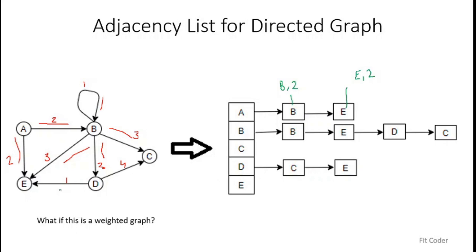Let's check node D: it has two outgoing nodes, C and E. For C we store (C, 4) and for E the weight is 1, so we store (E, 1). This approach applies the same way for all nodes. Instead of just storing the element name, we store the weight alongside it — we can create a pair in C++ to hold both pieces of information together.